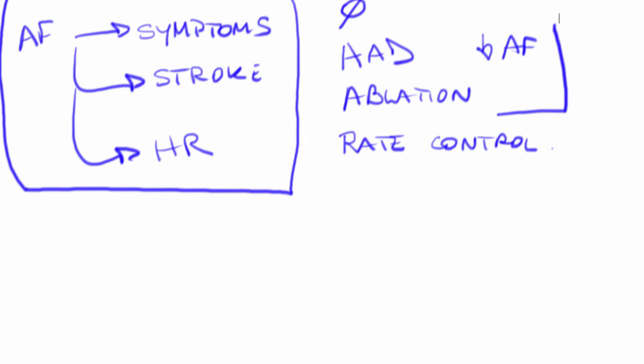This is what we normally call rhythm control strategy or rate control strategy. These are the only two ways to treat AFib: control the rate or the rhythm.